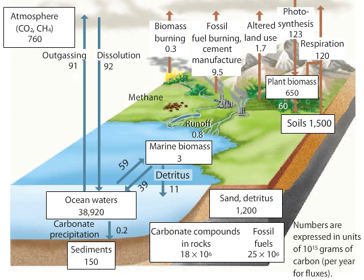The atmospheric pool of methane is increased through livestock production, rice cultivation, and water storage in reservoirs, because microbes in the guts of cattle and in waterlogged sediments break down organic compounds anaerobically to produce methane. Although the atmospheric pool of methane is far smaller than that of carbon dioxide, both are potent greenhouse gases and affect Earth's radiation balance.